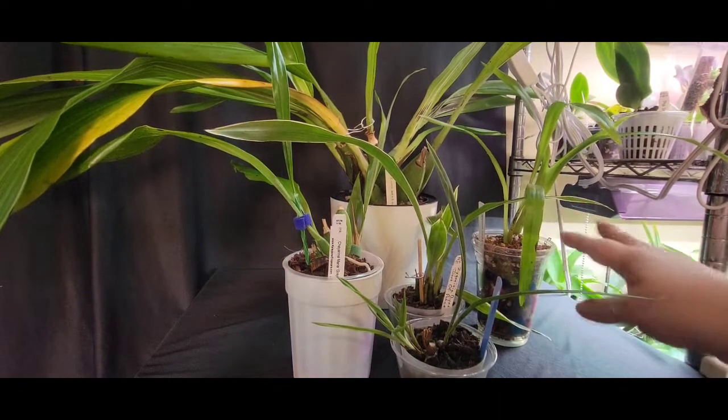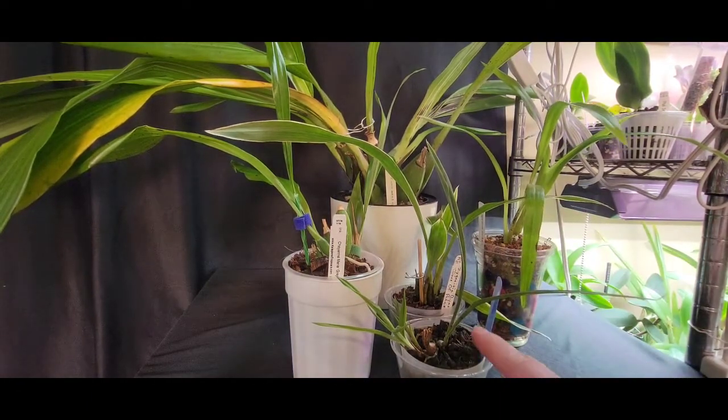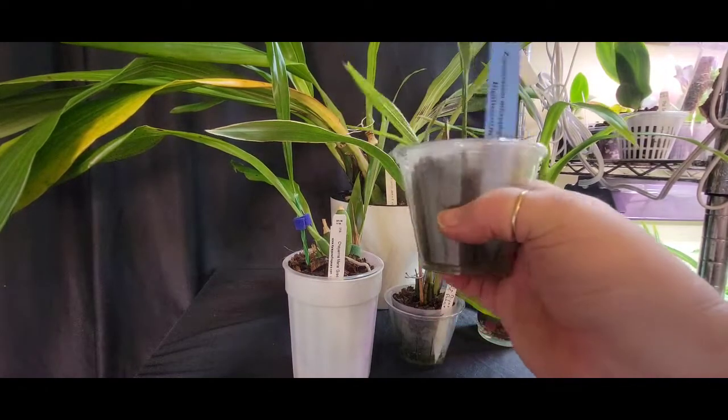So I'm not sure how big they get, but I do. This one is a small one. This is Zygo microphylla. Now it stays small and it's got two new growths on it right now.